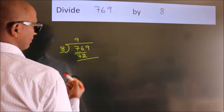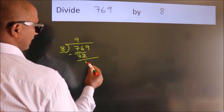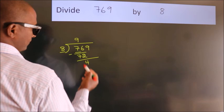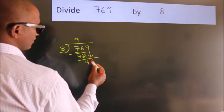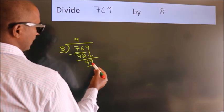Now we should subtract. We get 4. After this, bring down the beside number. So 9 down. So 49.